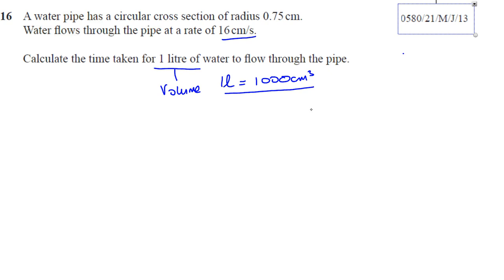You have a circular cross-section of pipe, so I'll draw a circle and try to draw a pipe. Now this pipe has a radius of 0.75 centimeters, that's the radius. And it says the water flows through the pipe at 16 centimeters per second. Now this is a length, it's not a volume.